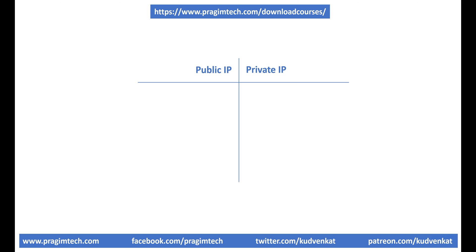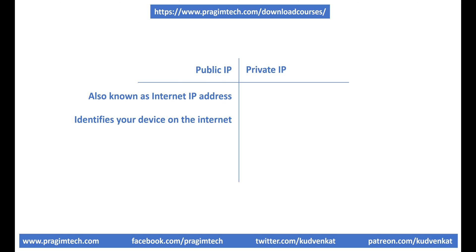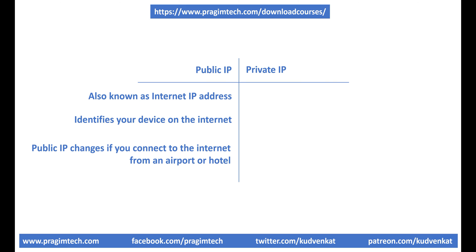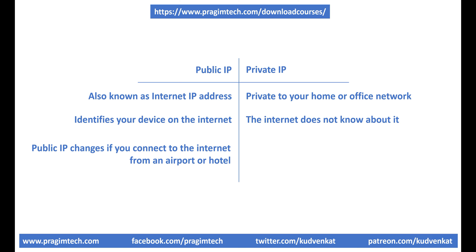Here are some important points to keep in mind about public and private IP addresses. Public IP address is also commonly called the internet IP address — it is by this public IP address that your computer is identified on the internet. If you connect to the internet from an airport or hotel, your public IP address changes. Private IP address is private to your home or office network; the internet or external world does not know your private IP address. Private IP addresses are generated by your internet router.